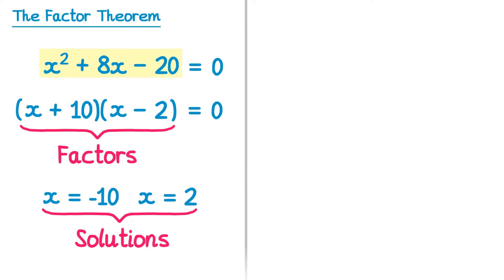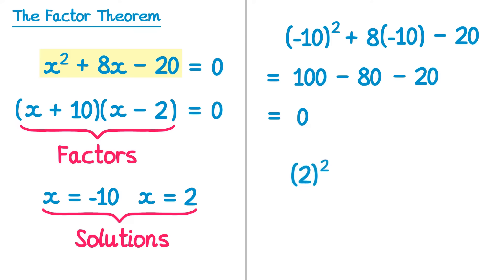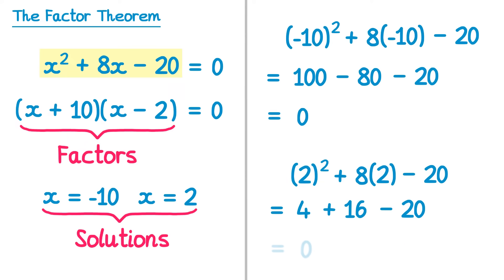Let's verify that's true. If we substitute negative 10 in: negative 10 squared plus 8 lots of negative 10 take 20. Negative 10 squared is 100, 8 times negative 10 is negative 80, then take away 20 — this does indeed give zero. And substituting 2 in: 2 squared plus 8 lots of 2 take 20. 2 squared is 4, 8 lots of 2 is 16, then take 20 — and this also gives zero.